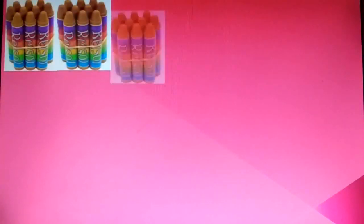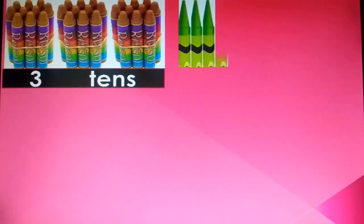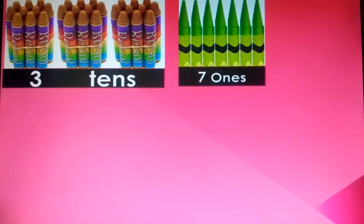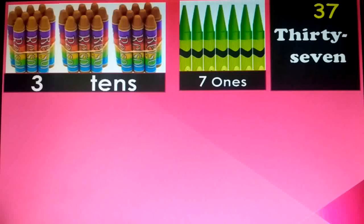We have not got 10 things — these are loose, so that's why we have not made a bundle. Next: 1 ten, 2 tens, 3 tens, and 1, 2, 3, 4, 5, 6, 7 — 7 ones. 3 tens and 7 ones is 37. T-H-I-R-T-Y, 30, dash, S-E-V-E-N, 7. Thirty-seven.